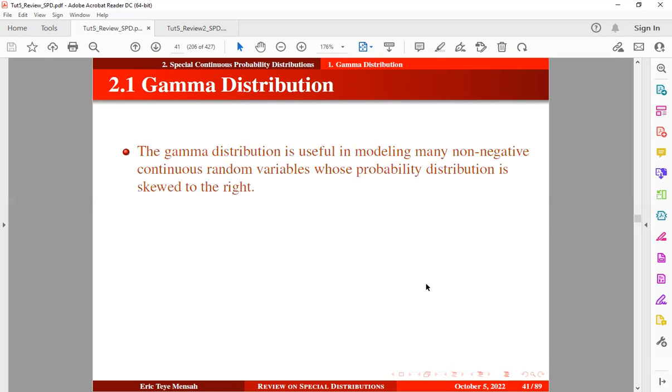So the gamma distribution is useful in modeling many non-negative continuous random variables whose probability distribution is skewed to the right.